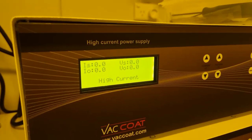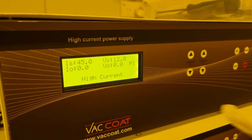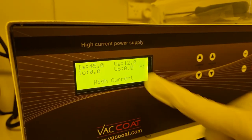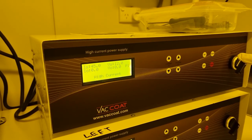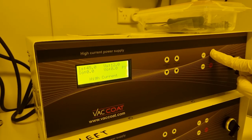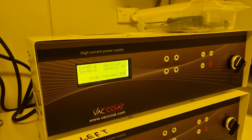When we're ready, we turn the high current power supply on. This will energize these systems on the right. We have checked our set points of 45 amps and 12 volts. When we're ready, we press the start button. Pressing the start button triggers the current. The voltage is measured and the current is set.